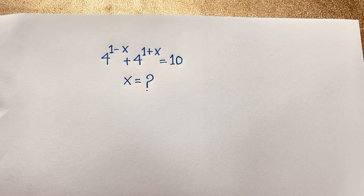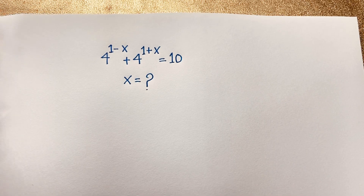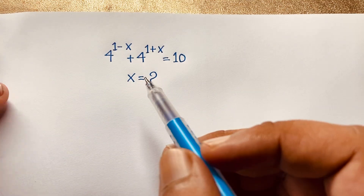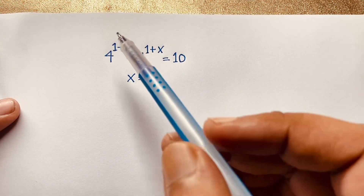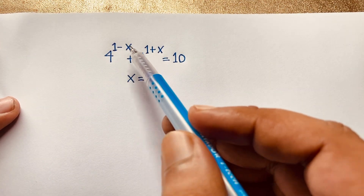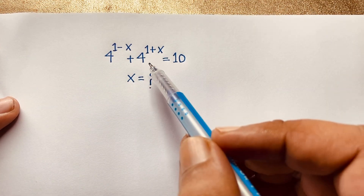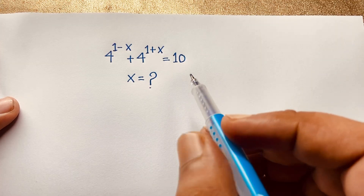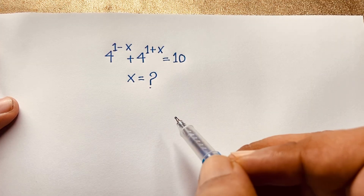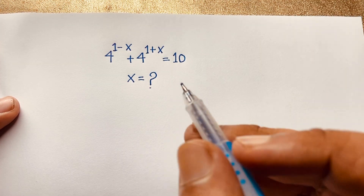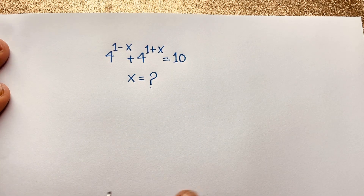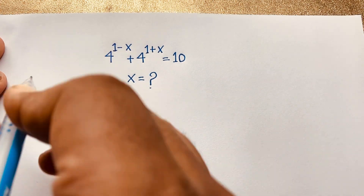Hello everyone, welcome to Russia's Classroom. Today we have solved an interesting exponential math problem. This question is: 4 to the power (1 minus x) plus 4 to the power (1 plus x) is equal to 10. What is x? How to solve this interesting math question? This is our math solution.